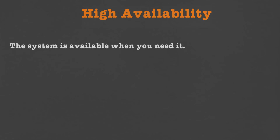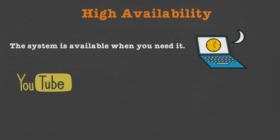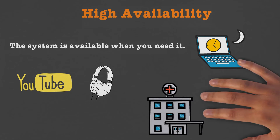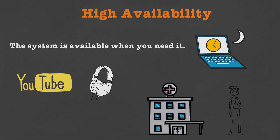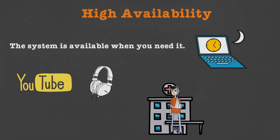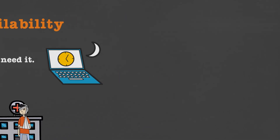Next we talk about the concept of high availability. A highly available system is a system that is available when you need it. YouTube is an example of a highly available system — people always count on YouTube whenever they want to listen to music or watch videos. Ideally, all hospitals should be highly available to the public.